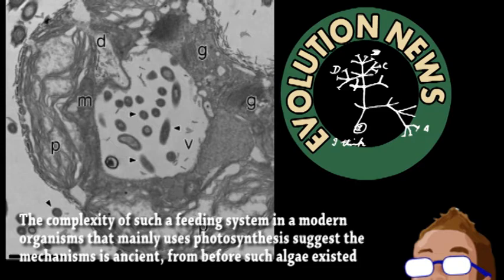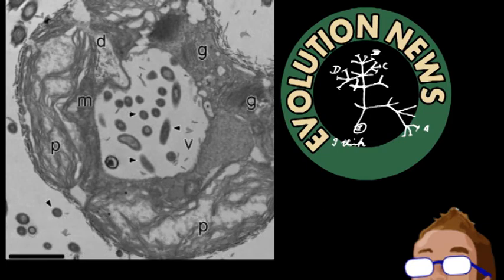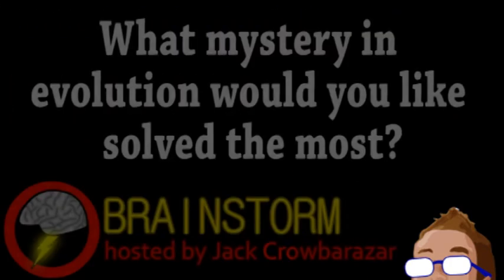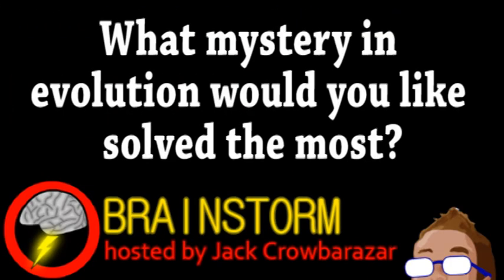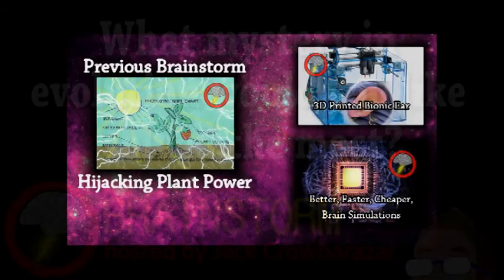Although it's not necessarily the most exciting news, it is important. The development of complex photosynthetic organisms paved the way for the animals and other organisms, including us. Hope you enjoyed this episode. If you had to pick just one, which mystery in evolution would you like solved the most? Let us know your thoughts on that and all the stories in the comments.